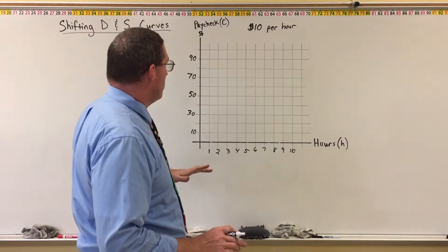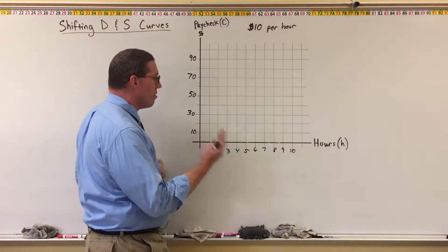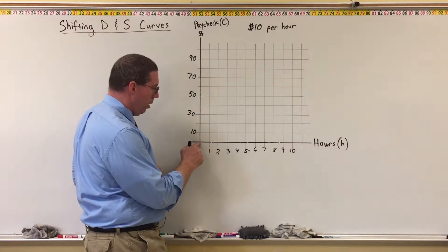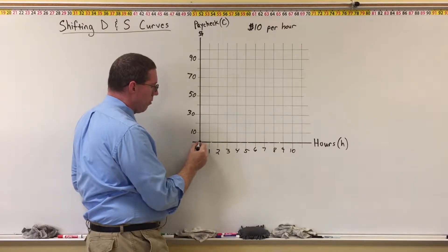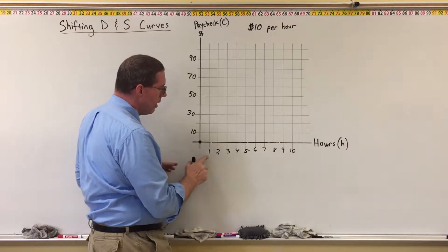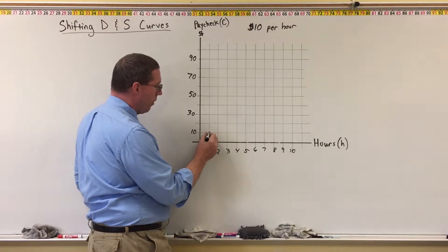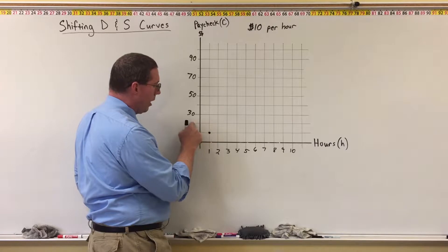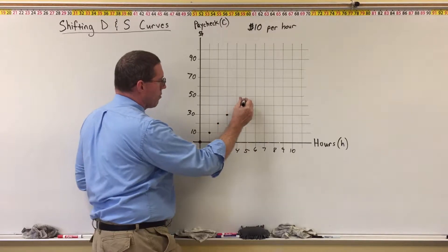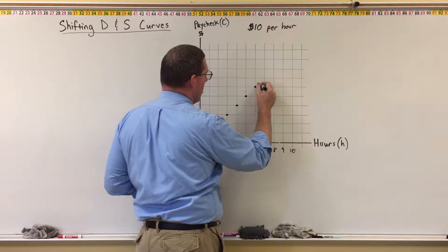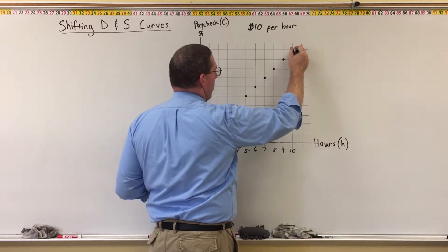We're going to graph this: based on how many hours they work, how much is their paycheck? If they work zero hours, they make zero dollars. If they work one hour, they earn $10. Two hours gives $20, three hours gives $30, four gives $40, five gives $50, six gives $60, seven gives $70, eight gives $80, nine gives $90, and ten hours gives $100.